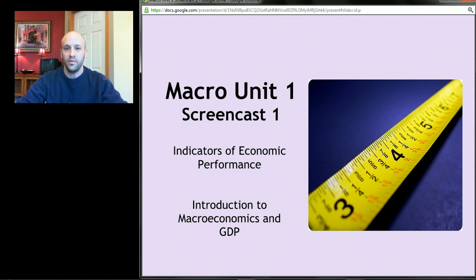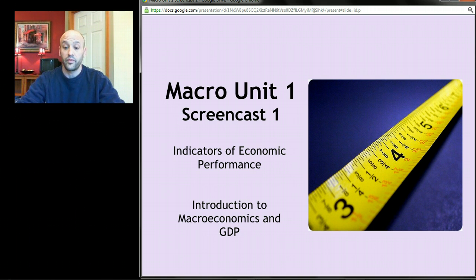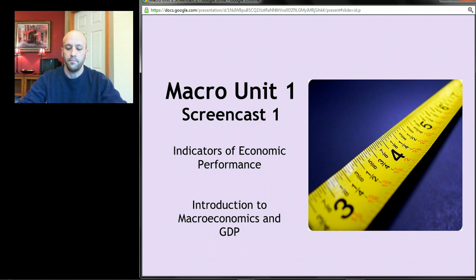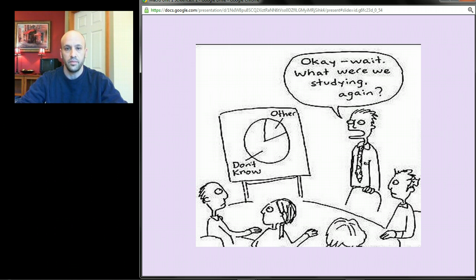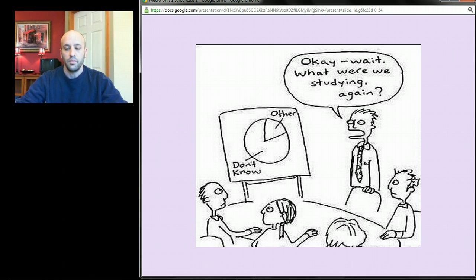Welcome back. We are now in macro unit one, screencast one. The unit is indicators of economic performance, and the content for this screencast is introduction to macroeconomics and GDP. We just spent a semester talking about microeconomics, and now we're going to do macroeconomics — that's the second semester, second AP exam you'll be taking in May. We're going to talk about the difference between microeconomics and macroeconomics, and then get into maybe the most important concept in all of macroeconomics.